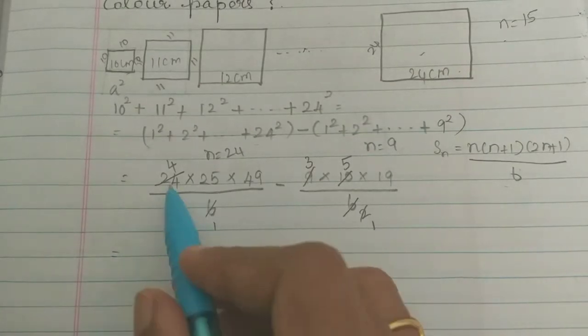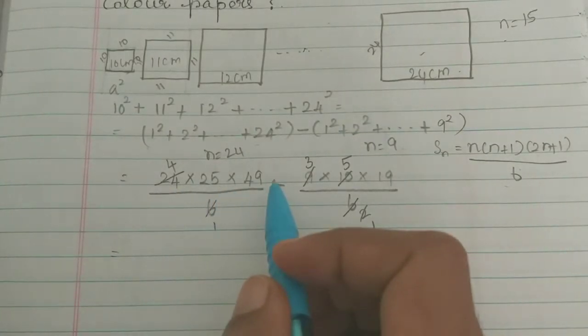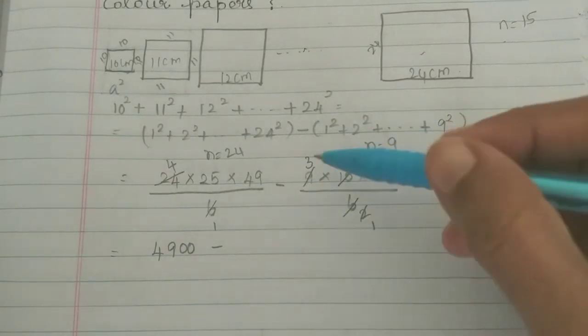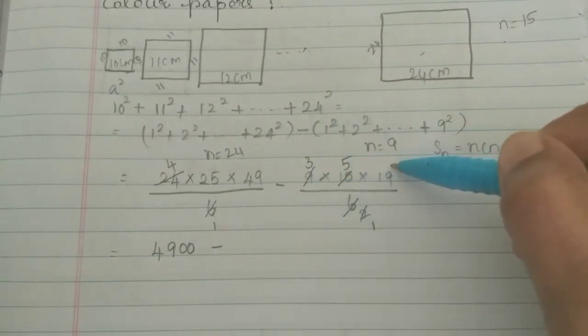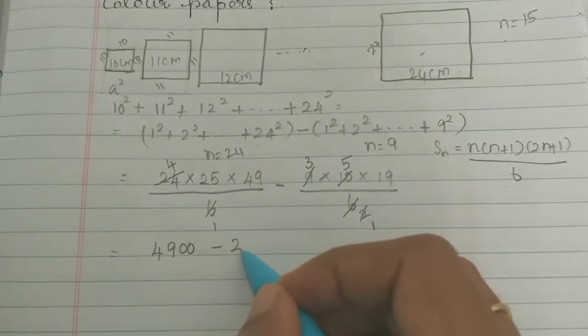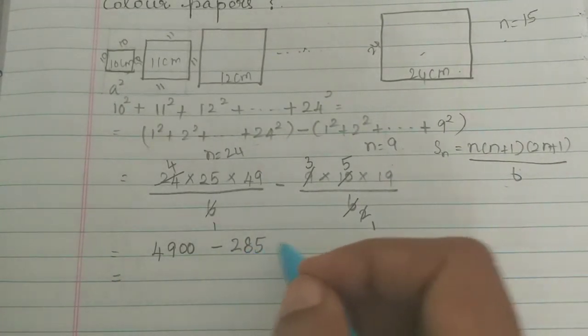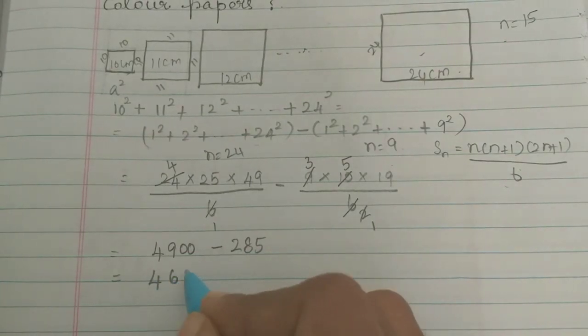Which is equal to 4 into 25 into 49, which is 4900, minus 15 into 19, which is 285. So 4900 minus 285 equals 4615.